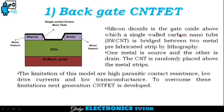In back gate CNTFET, silicon oxide is the gate oxide, above which a single-walled carbon nanotube is bridged between two metal prefabricated strips by lithography — one metal acts as source and the other as drain. The CNT is randomly placed above the metal strips. The limitations of this model are high parasitic contact resistance, low drive currents, and low transconductance. To overcome these limitations, the next generation CNTFET was developed.